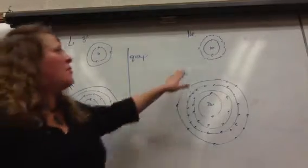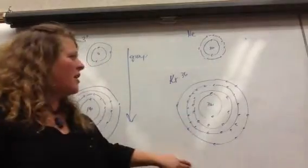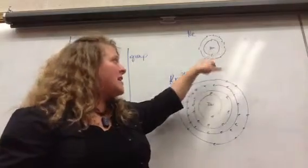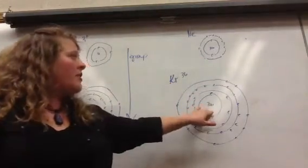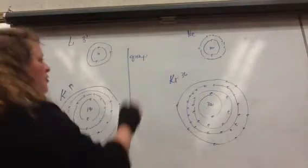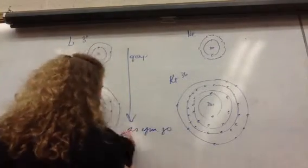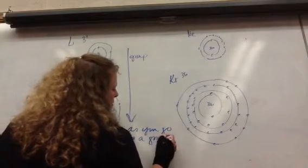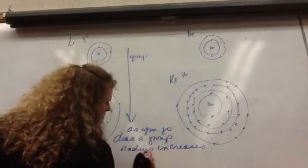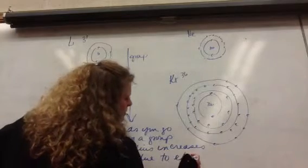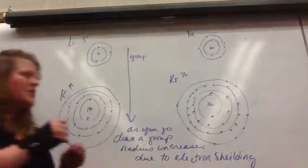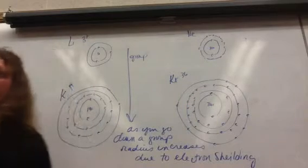So, let's look at that example for neon and krypton. As we go from neon to krypton, we've added energy levels. We still have eight valence electrons in the outermost shell, but now here, there are a lot more layers to shield it from the pull of the nucleus. So, we say that as you go down a group, radius increases due to, we call it, electron shielding.